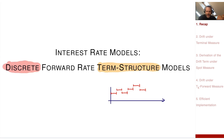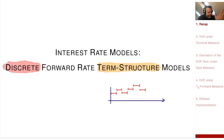Then there was a second phase where we looked at specific products like the caplet or the swaption. For these products we needed a model because of the non-linear payoff. We specified a very special model that allowed us to derive an analytic formula, so valuation in the computer was just the implementation of this formula — which could include some numerical approximation, for example the cumulative distribution function of the normal distribution.